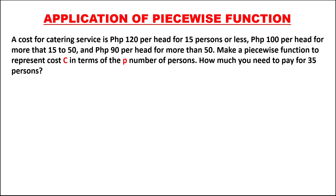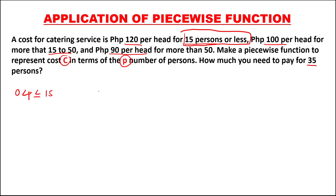For this problem, the cost of catering service is 120 pesos per head for 15 persons or less, 100 pesos per head for more than 15 to 50, and 90 pesos per head for more than 50. We need to make a piecewise function representing cost C in terms of number of persons, then find how much to pay for 35 persons. We have 3 conditions. For the first: if the number of persons is greater than 0 but less than or equal to 15, the cost is 120 times the number of persons.